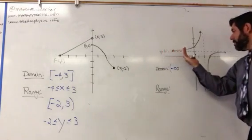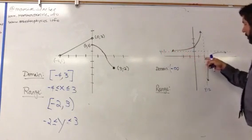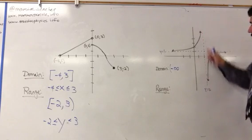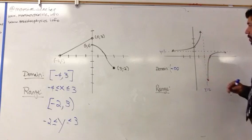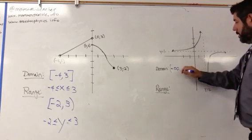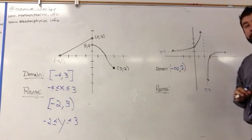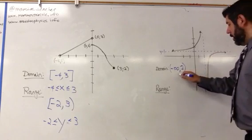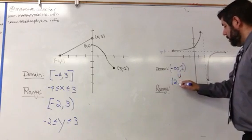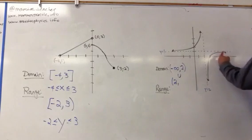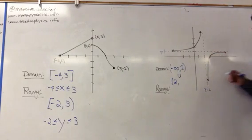Then as I continue to go on the x axis, I'm going to get very, very close to 2, but I'm not going to hit 2 because this is an asymptote, and the vertical asymptote we're not going to cross. So in this case we're going to stop at 2 and skip it — we're not going to include 2. Then we're going to continue and go all the way out to infinity.